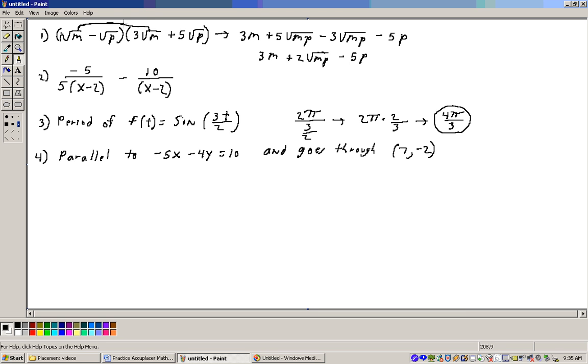Now go to your outer. Take the square root of m times 5 square roots of p. Well, that's 1 times 5 is 5. Square root of m times the square root of p is square root of mp. Now distribute this minus square root of p through. So minus 1 times 3 is minus 3. Square root of p times square root of m is square root of mp. Now the minus 1 square root of p times 5 square root of p, minus 1 times 5 is minus 5. Square root of p times square root of p is the square root of p squared, which is p.